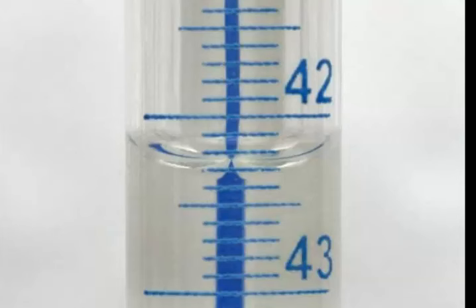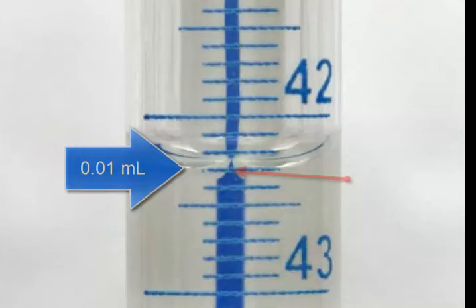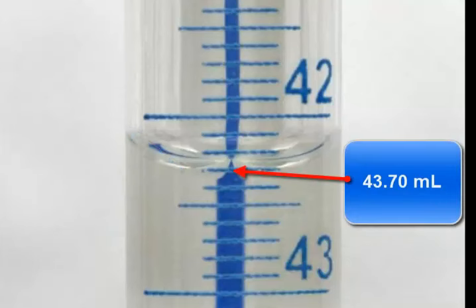If we look at the burette, which is also used for measuring volumes, it is marked off every .1 milliliters. Therefore, we could estimate to the one-hundredth of a milliliter, making the volume 43.70 milliliters.